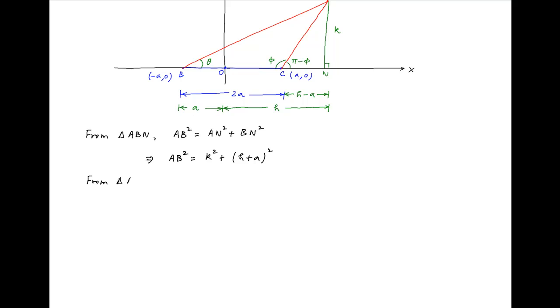Similarly, applying Pythagoras theorem on right angle triangle ACN, we get AC² is equal to AN² plus CN², which is equal to k² plus (h - a)².